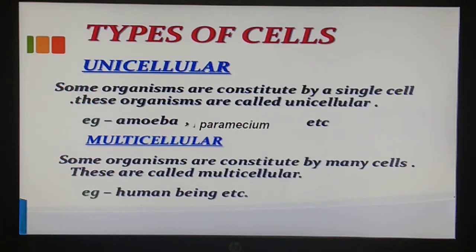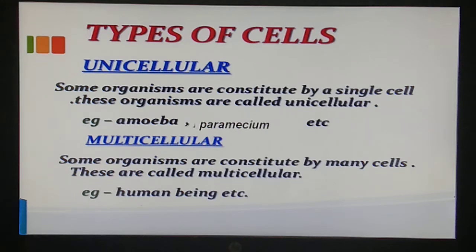Talking about multicellular organisms, they are constituted of many cells - for example human beings. In a multicellular organism, a single cell performs only one or a few activities. In a unicellular organism all functions - excretion, respiration, everything - are performed by that single cell. But in multicellular organisms, a single cell performs one activity only; for example, in the human body respiration, excretion, and reproduction are each done by different organs.